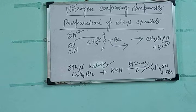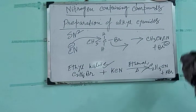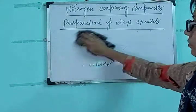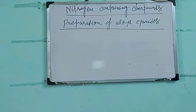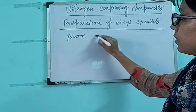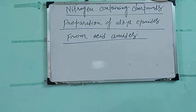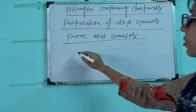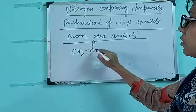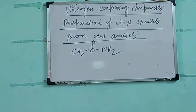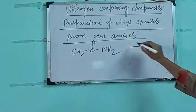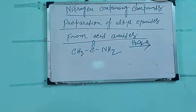The next preparation of alkyl cyanide is from acid amides. Consider any acid amide. When you heat the acid amide in presence of phosphorus pentoxide (P₂O₅), dehydration occurs.